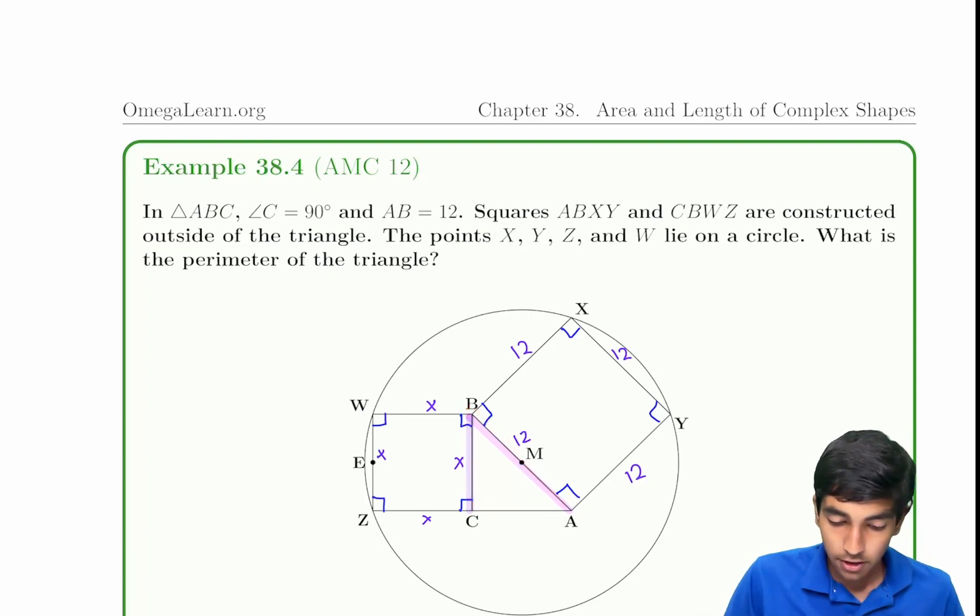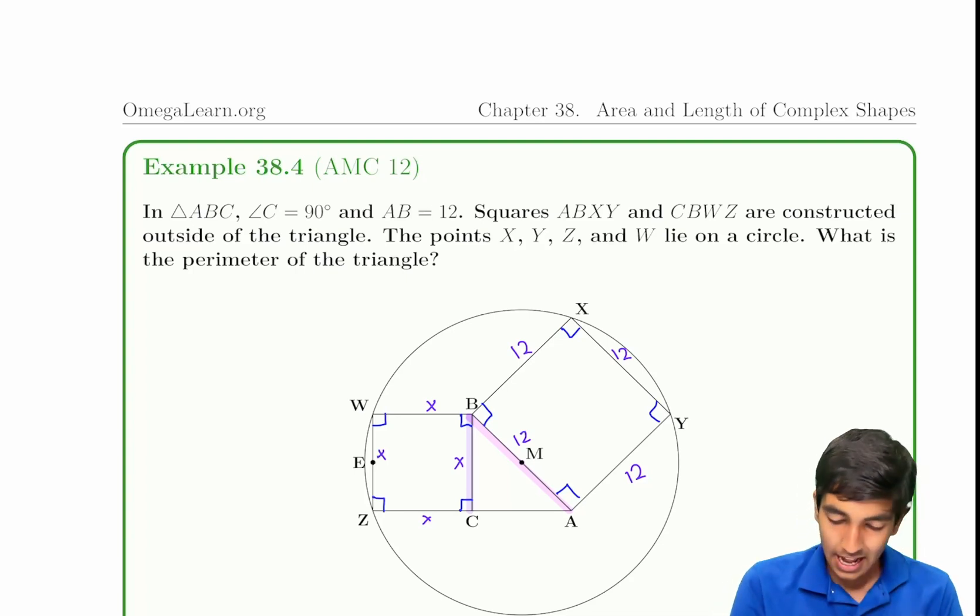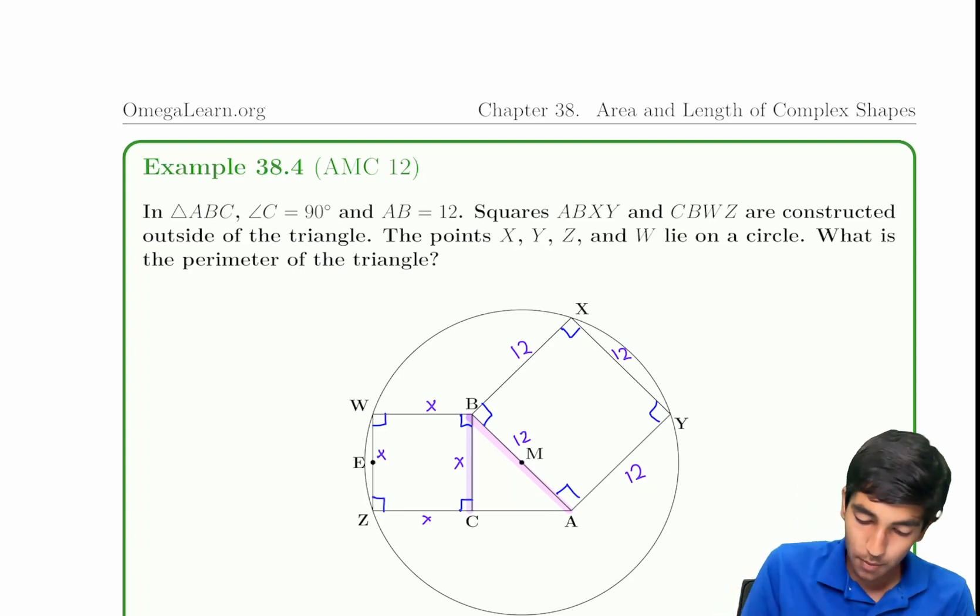Here's really the tricky part of this problem. The fact that x, y, z, and w all lie on a circle. That's really the tricky condition here. Like I mentioned in a previous problem, we want to draw all important radii. But the tricky part here is we don't really know where the center is.